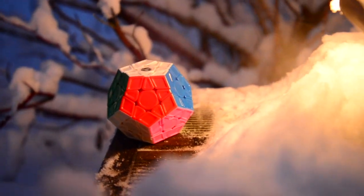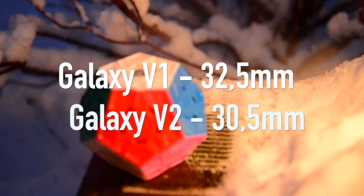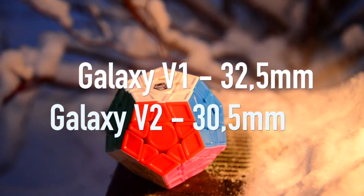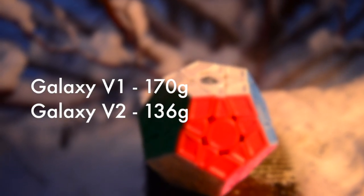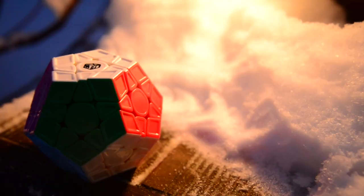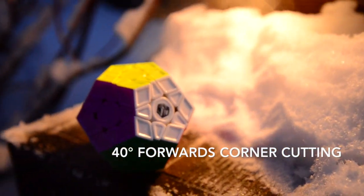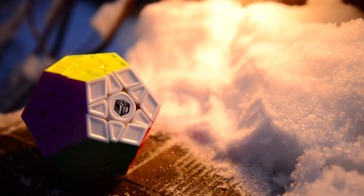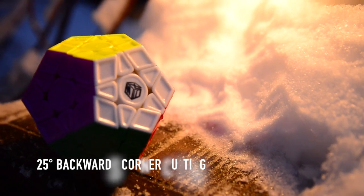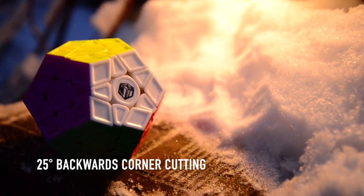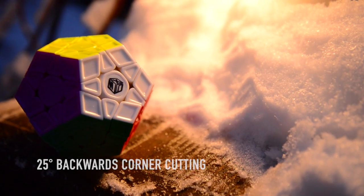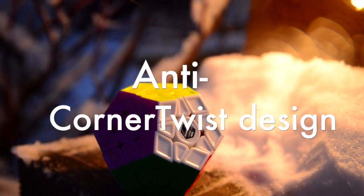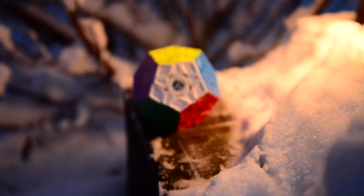The Galaxy version 2 is way smaller than the version 1 and the edge length is only 30.5mm. The version 2 is also way lighter weighing only 136 grams. The internal mechanism has been upgraded resulting in a glorious 40 degrees forward corner cutting and backwards corner cutting can reach around 25 degrees. The corners have been modified so the main issue with corner twisting on the version 1 has almost disappeared.